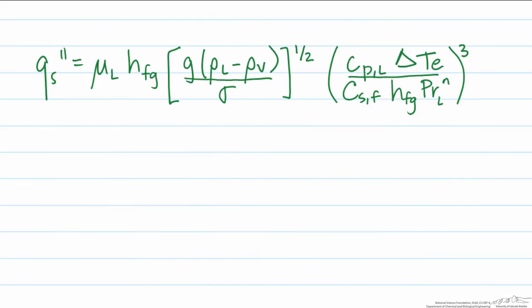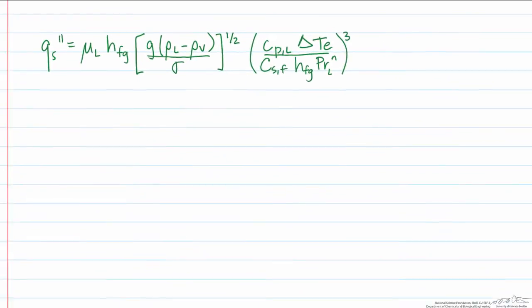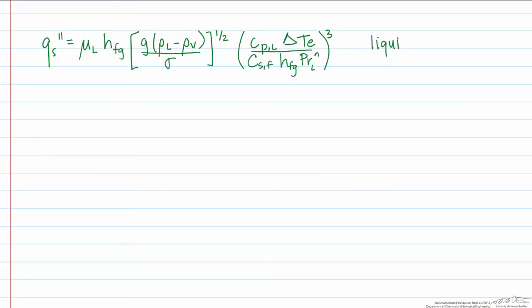Let's take a look at this equation. Our heat flux is calculated using properties of both the liquid and the vapor, and it includes two constants, C sub SF and N, that depend on the interactions between the surface and the fluid.